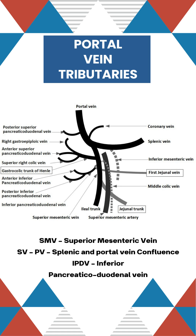The left gastric vein, also known as the coronary vein, joins the portal vein within 2 to 2.5 cm of the SMV-portal vein confluence, posteriorly. The anterior superior pancreaticoduodenal vein joins the right posterolateral wall of the portal vein.